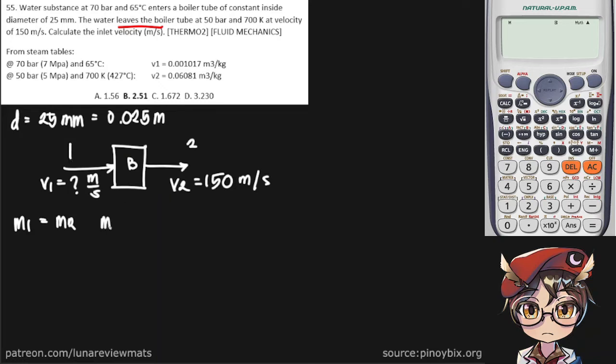And we know that mass can be found by, or rather, let's say this is mass flow rate by putting a dot over it. But the mass flow rate can be found by multiplying the volume flow rate by the density of our substance, or multiplying the volume flow rate by the reciprocal of the specific volumes, which are given here.